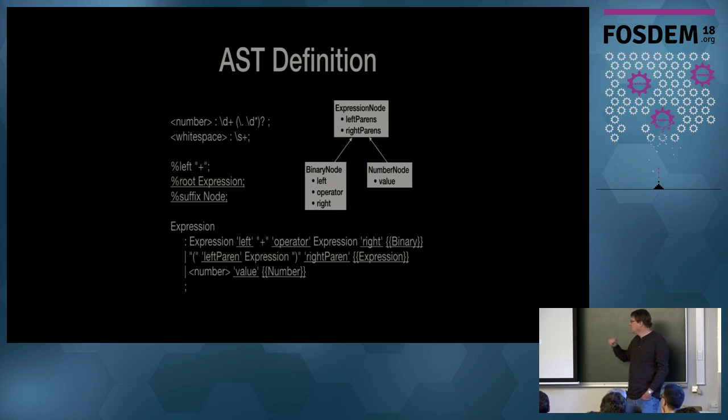So from that grammar, we generate essentially these three classes. With expression node being the root, we have our left paren being a collection of parency tokens, right paren being a collection of the right parency tokens. And all nodes will have that. Our binary node will have our left and right with the operator and the number node will have the value.